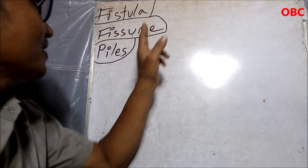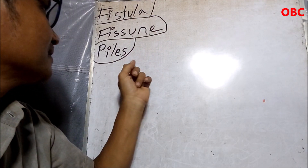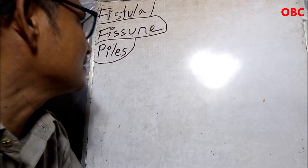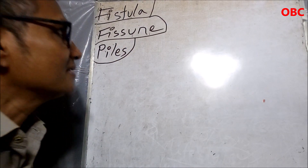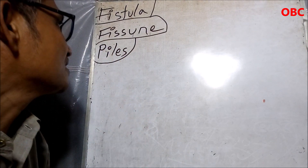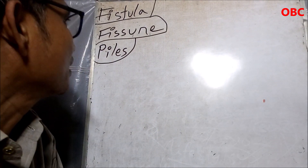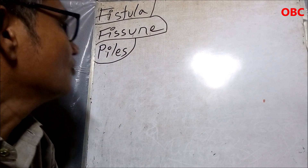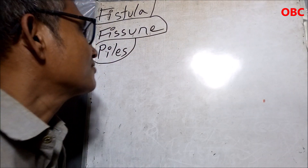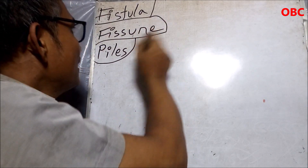Welcome to My Health Lesson. Today I'll be talking about fistula, fissure, and piles. These are very critical diseases. You will suffer a lot if you have ever developed these. There are basic differences between these three. I'll be talking about a lot of things here. I hope you enjoy and learn a lot so that you can get rid of these difficult diseases.